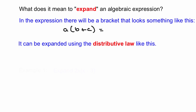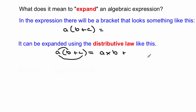We can use what we call the distributive law to work it out. So here it is: a(B + C). We take the term outside the bracket and multiply it with the first term inside the bracket, and then we take the term on the outside again and multiply it with the last term in the bracket. This can be written as aB + aC — that's the idea of expanding.